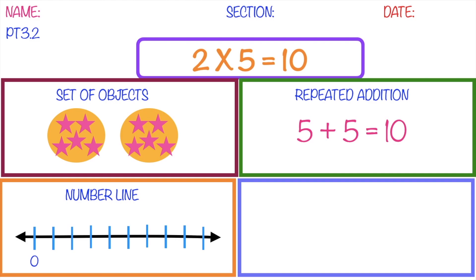The first jump will land at 5. The second jump will land at 10. So that's it. Let's show the jumps. 1, 2. So that is 2 times 5 equals 10.